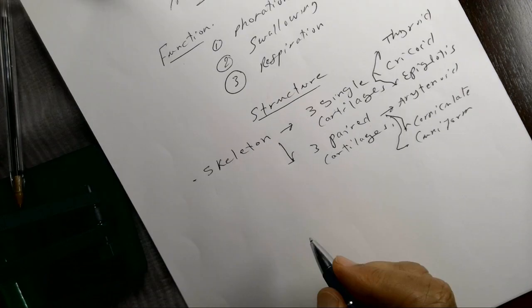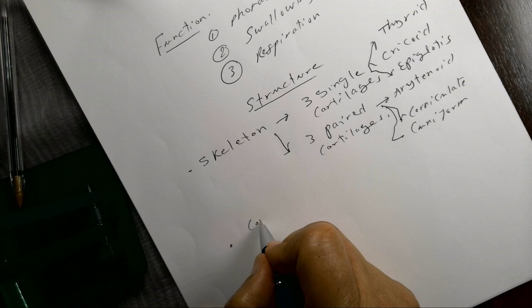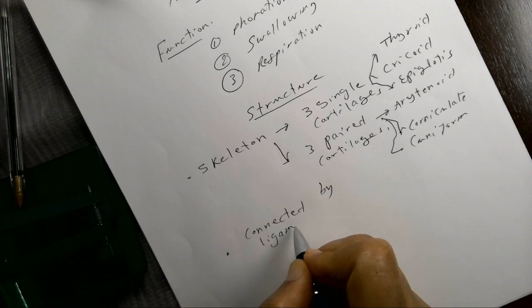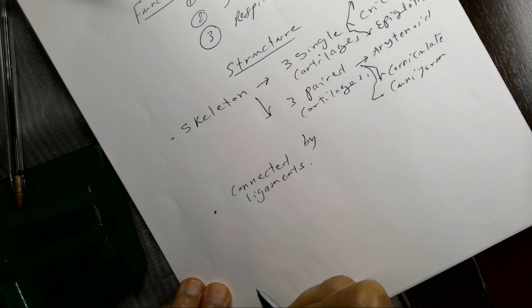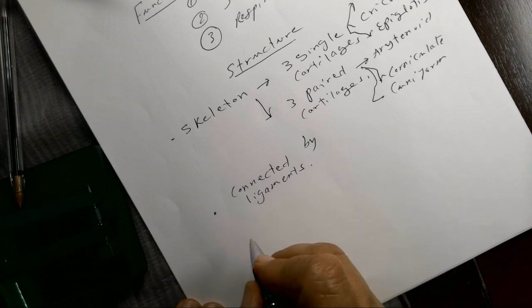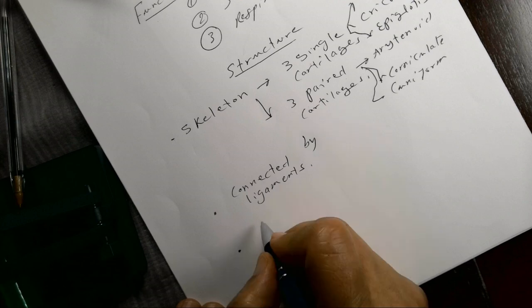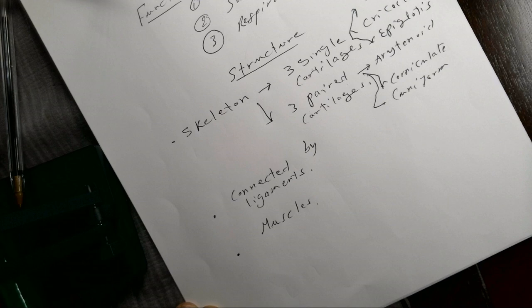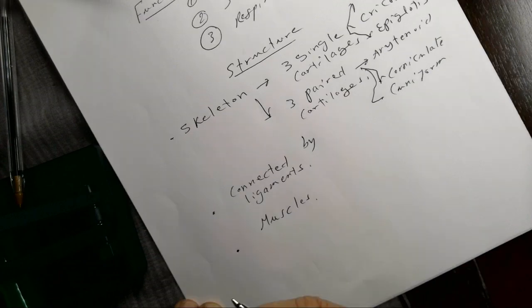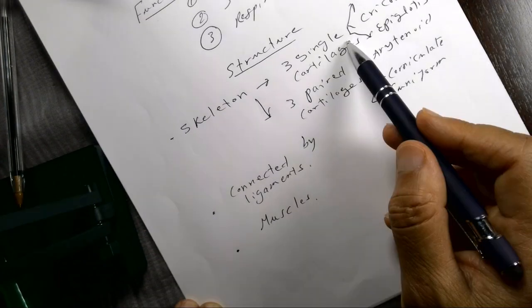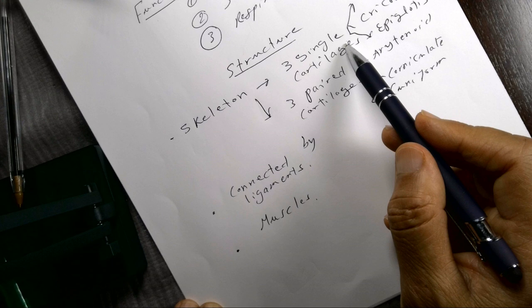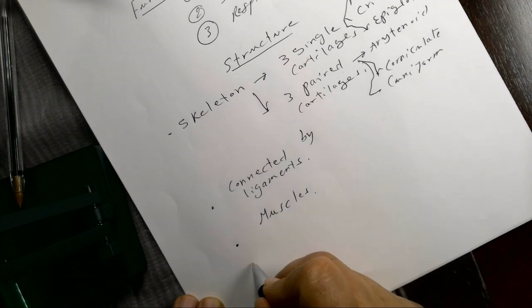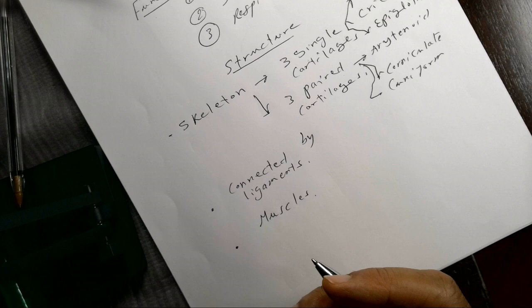The skeleton is connected by ligaments and membranes, then moved by muscles. This is the structure — external and also part of it is internal. So again: skeleton, which is a cartilaginous skeleton, connected by ligaments and moved by muscles. From inside, we have several ligaments which participate in the function of the larynx.